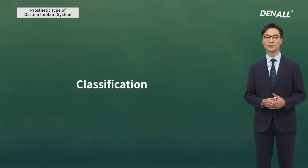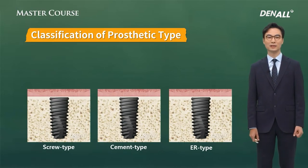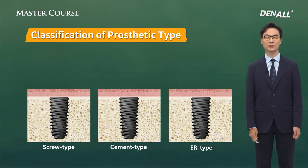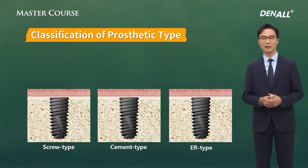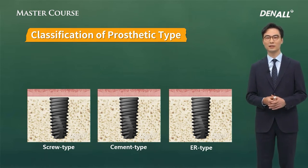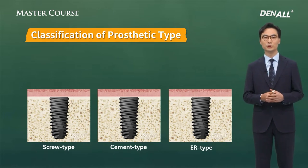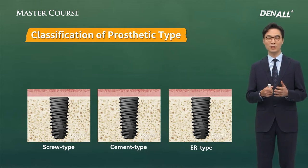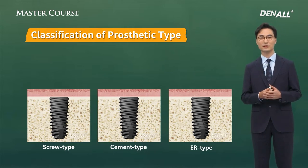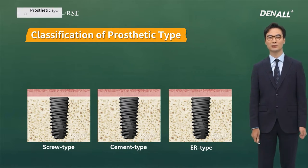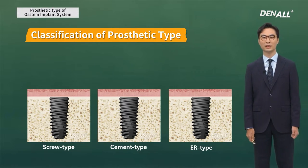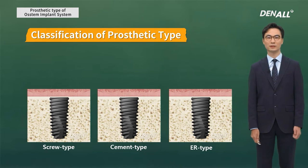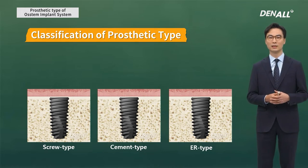First, I'm going to look at the classification of different implant prostheses. As you know, implant prostheses can be divided into screw type, cement type, and ER type. There are also hybrid fixed detachable bridges or implant overdentures. There are other types of removable prostheses, but today I'm going to focus on fixed prostheses.